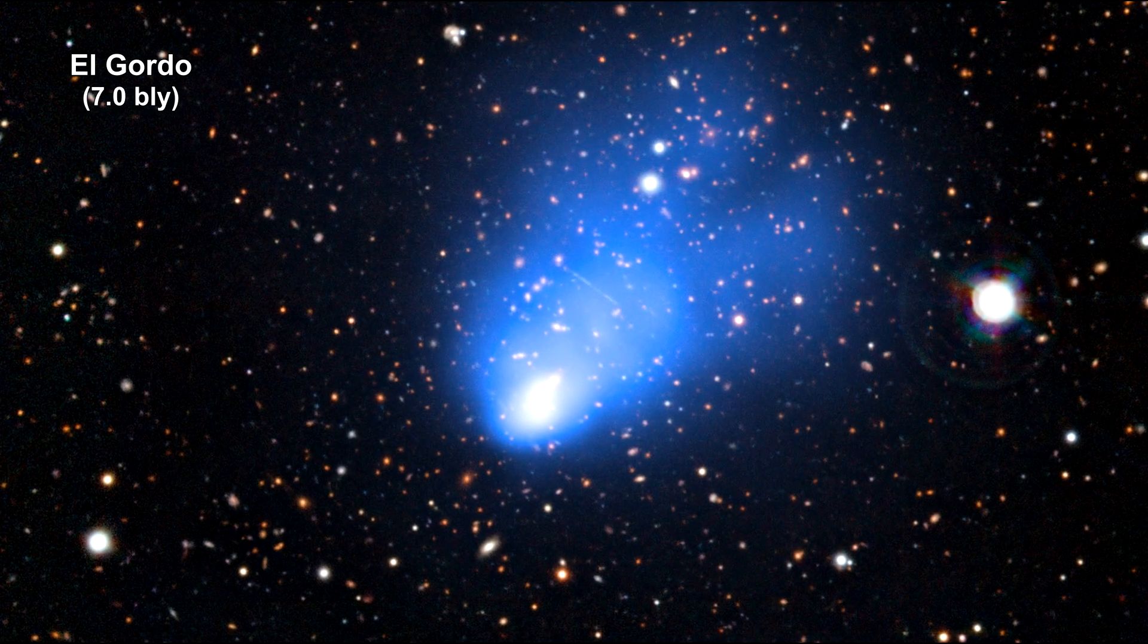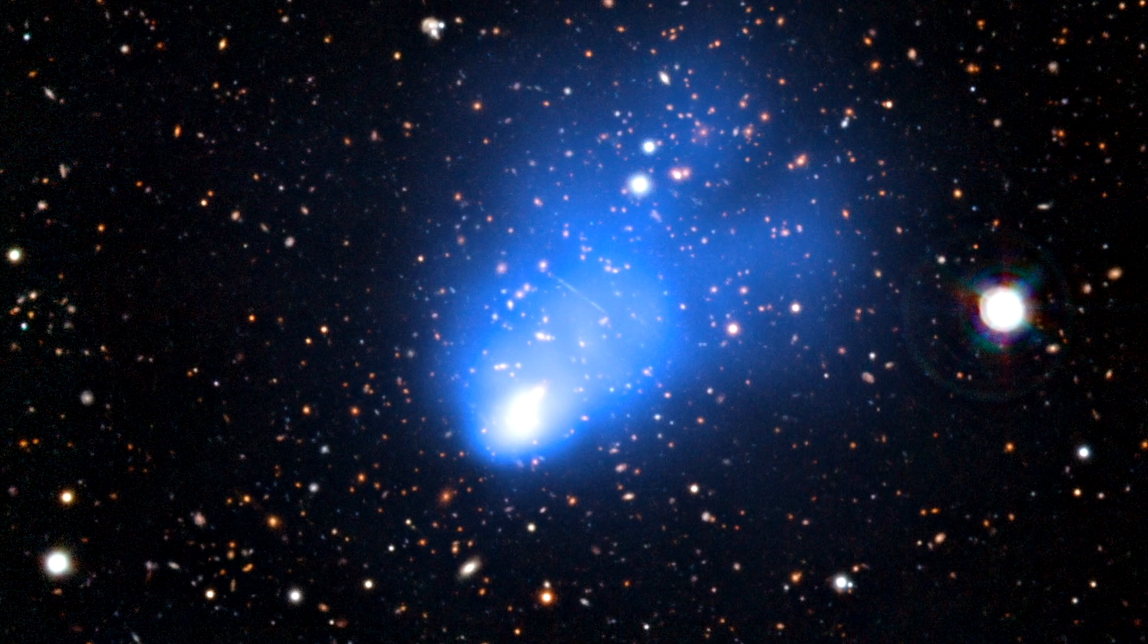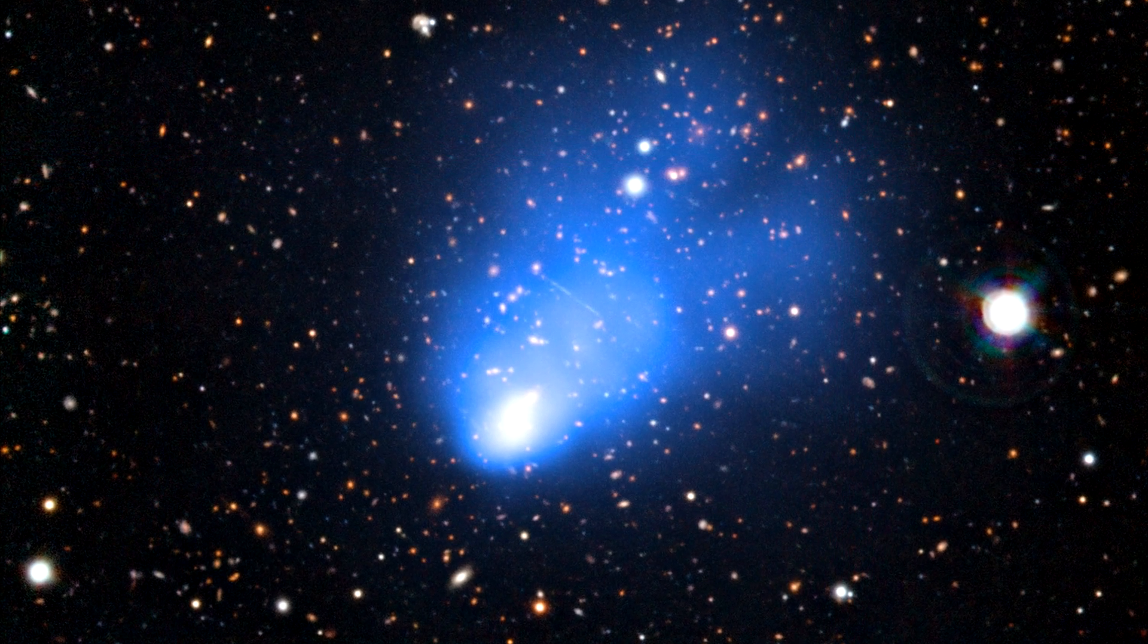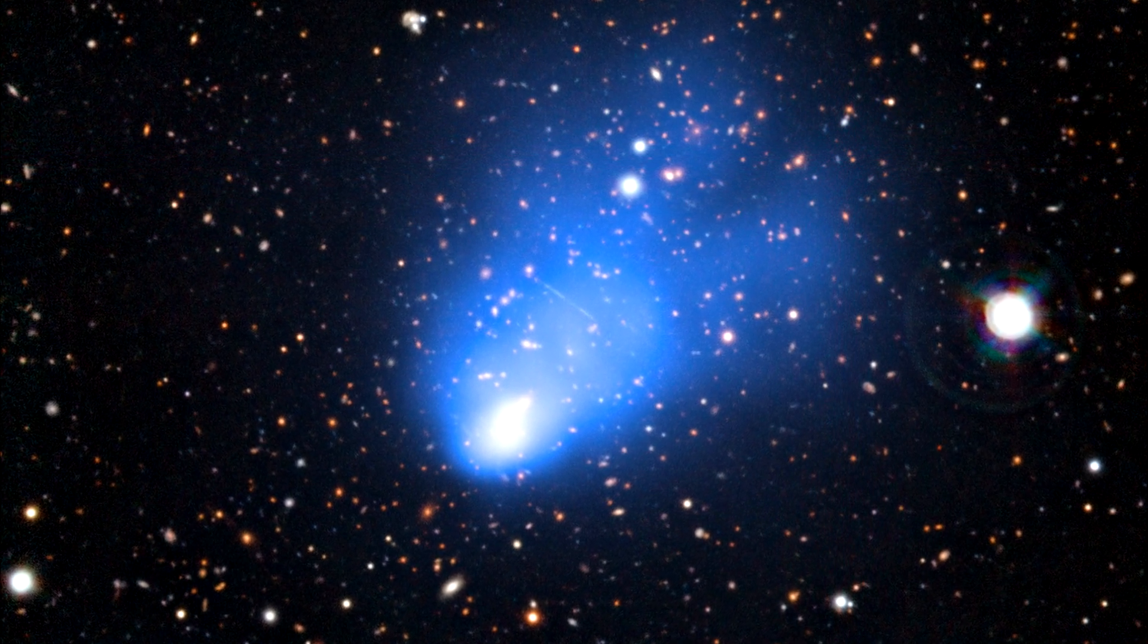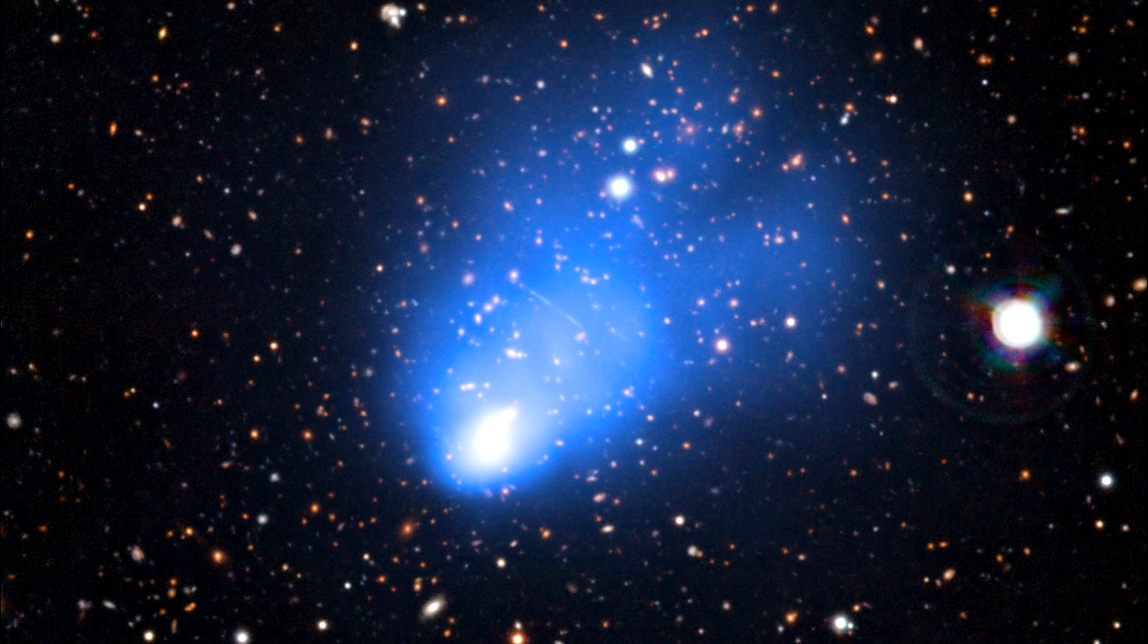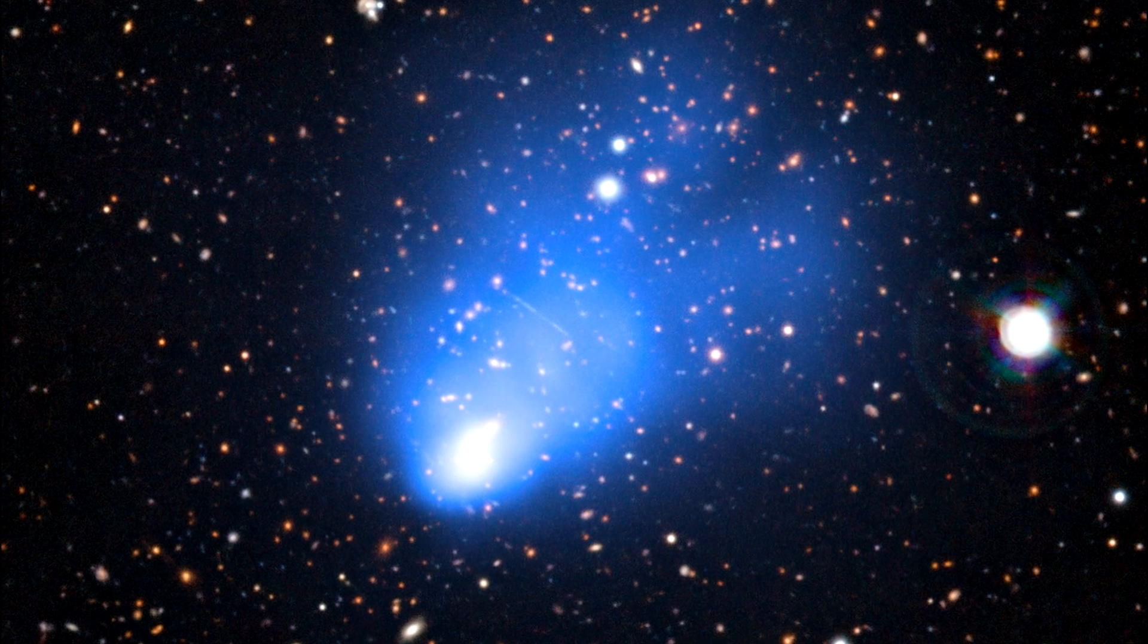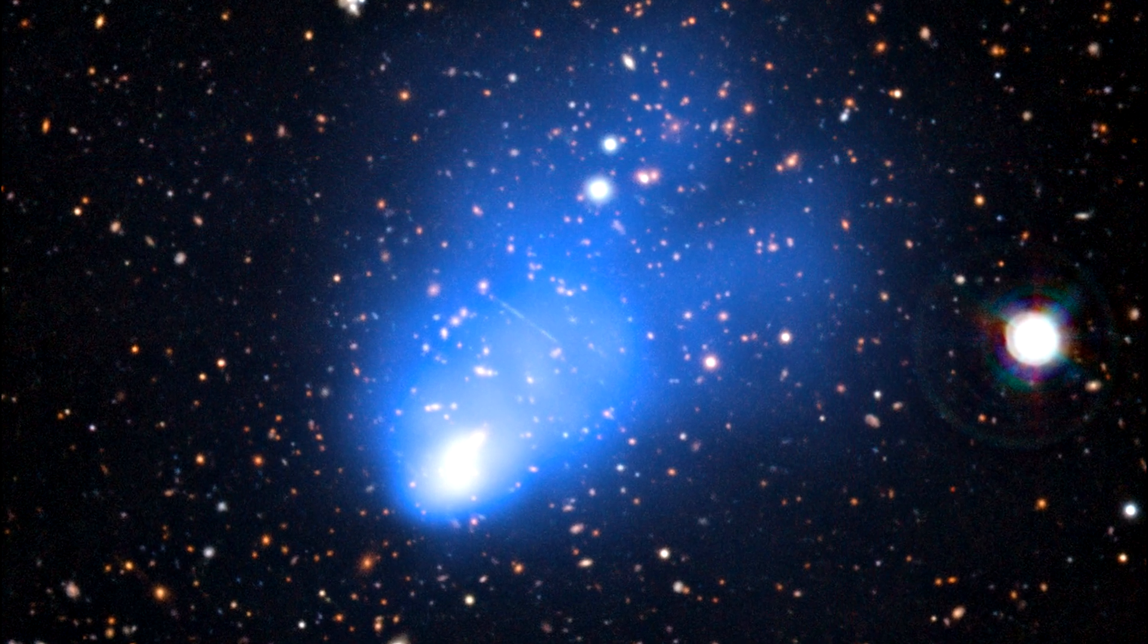This is a combined ESO very large telescope and Chandra image of the newly discovered galaxy cluster called El Gordo. It consists of two separate galaxy sub-clusters colliding. We are seeing what this cluster looked like when the universe was only half its current age.